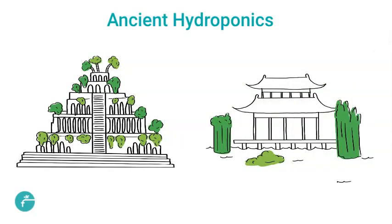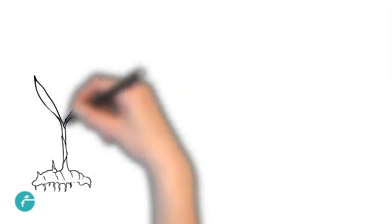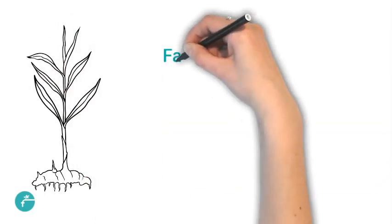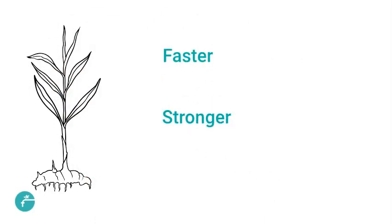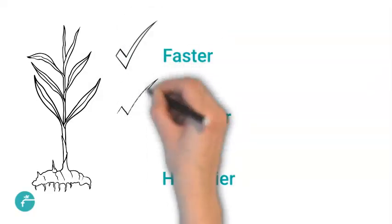These ancient gardening systems are believed to have been hydroponic in nature. Although the theory behind hydroponics has remained consistent, developments in modern technology has enabled us to grow crops faster, stronger and healthier.